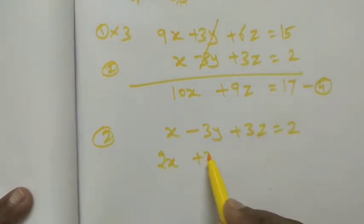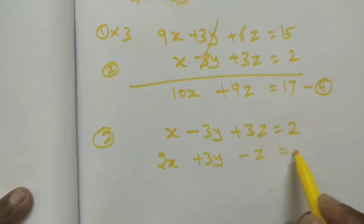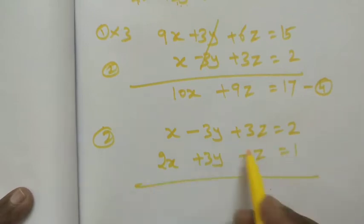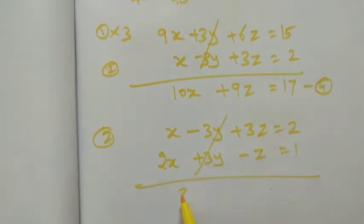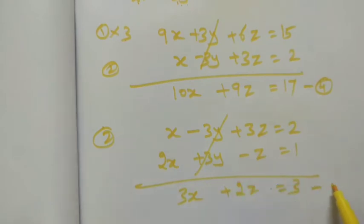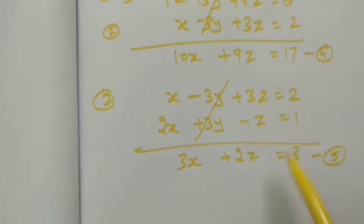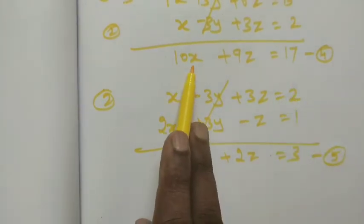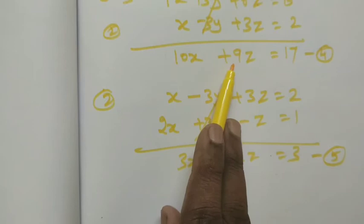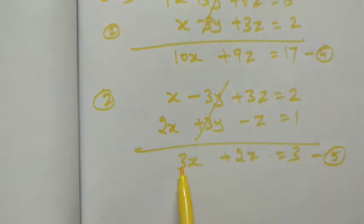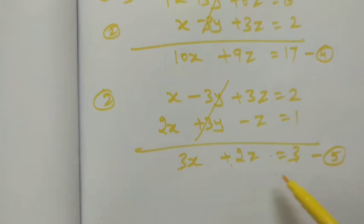Combining the first and third equations, after elimination we derive equation number 5: 3x plus 2z equals 3.